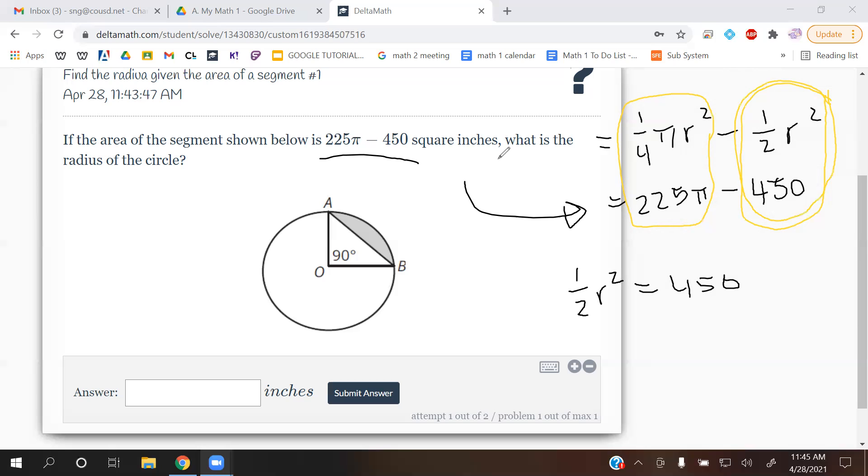So I'm going to write it as 1/2r² is equal to 450. So 1/2r² was 450. That's the part that got subtracted. Okay, so we're going to use that side. And then let's solve for r because r is our radius and we want to find the radius.